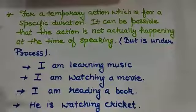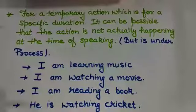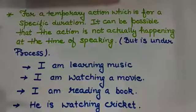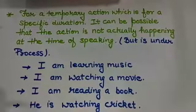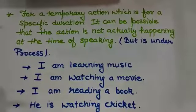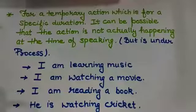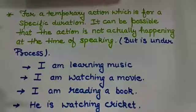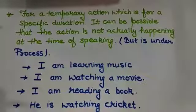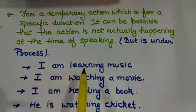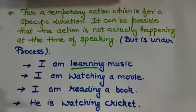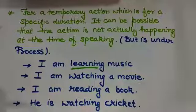Now, present continuous tense is also used to show a temporary action which is for a specific duration of time. It can be possible that the action is not actually happening at the time of speaking, but there should be a process going on. That means the work should be under process at that time. Like, I am learning music. This suggests that this is a temporary action. I am not going to learn music for the whole life.